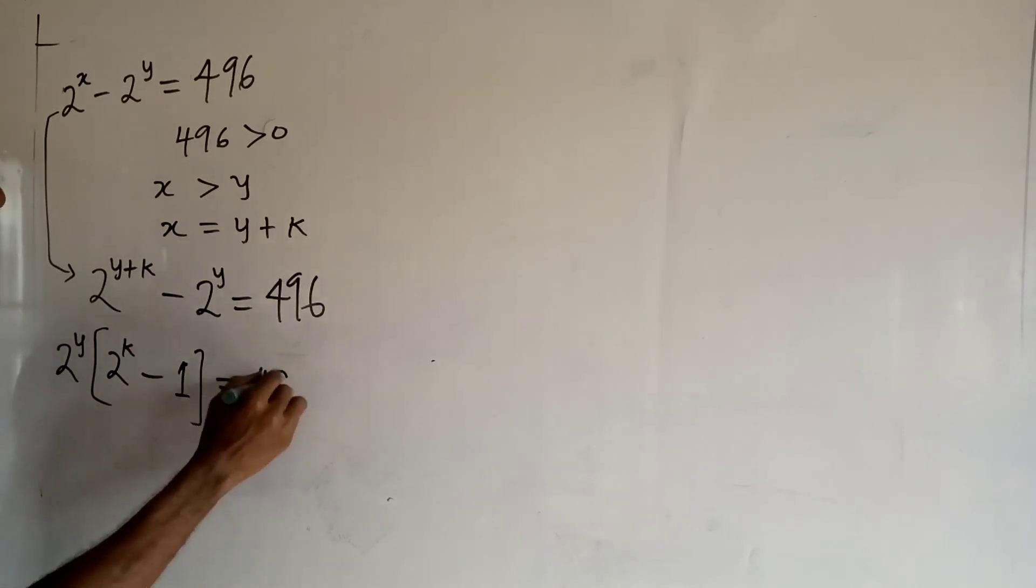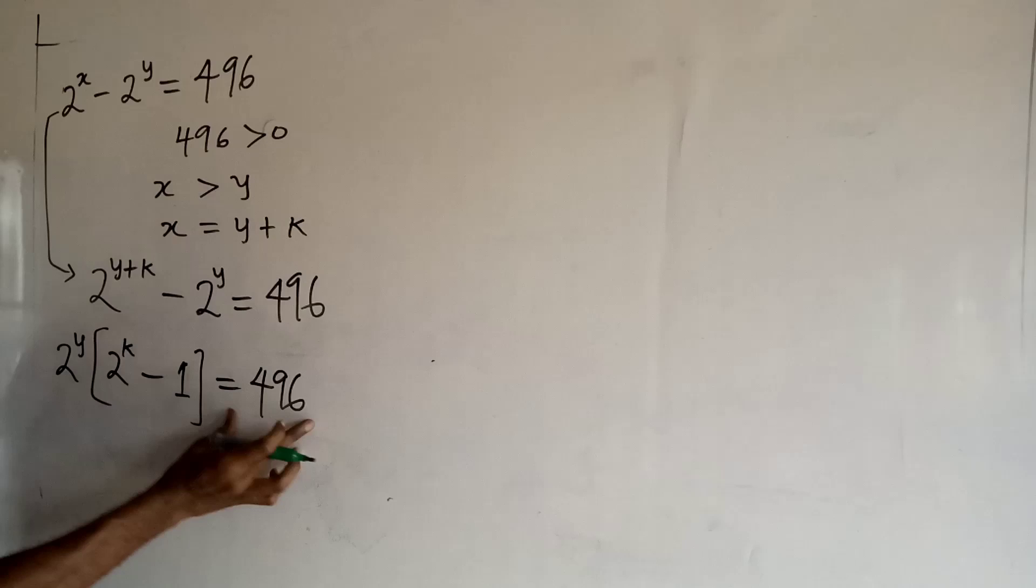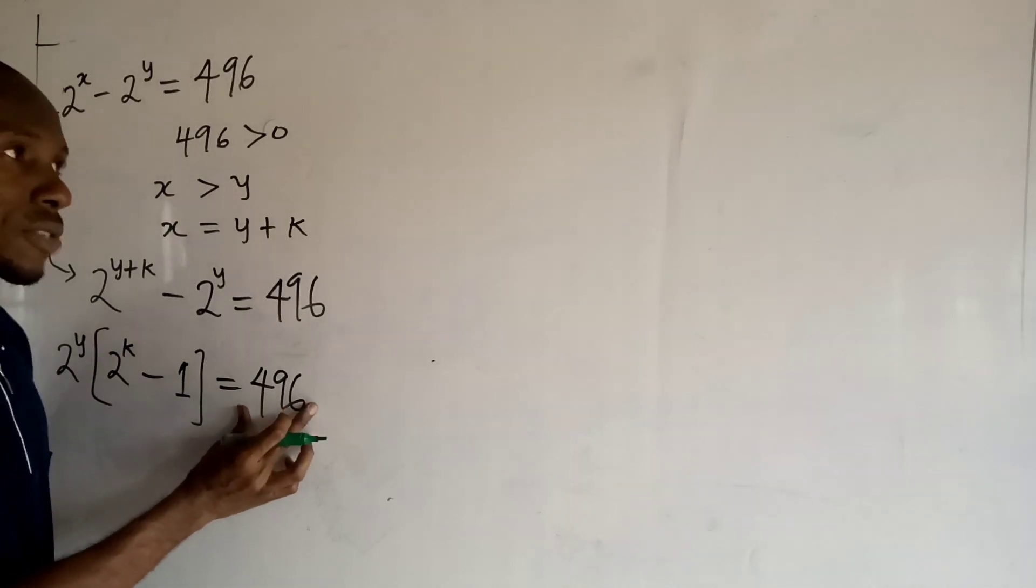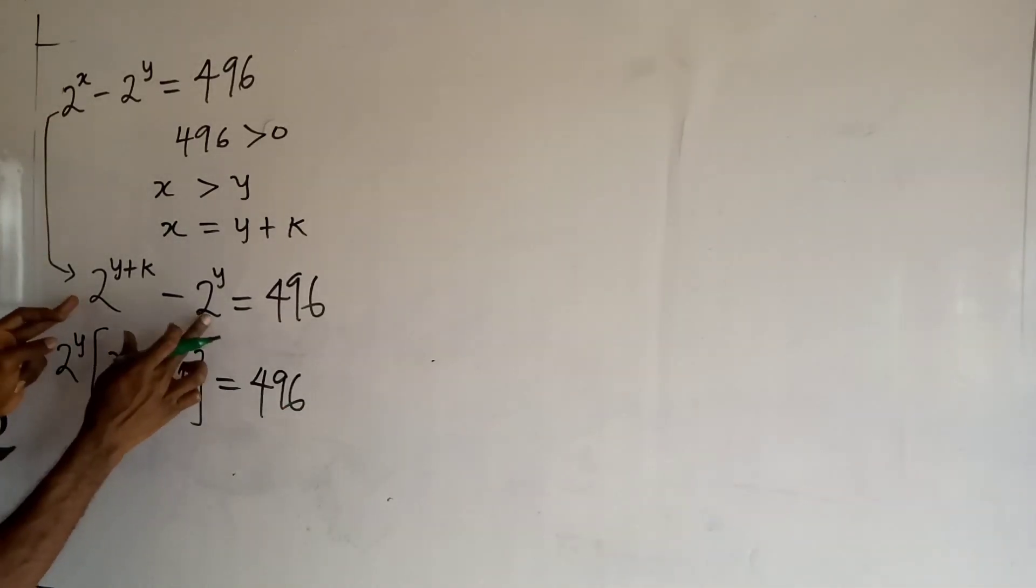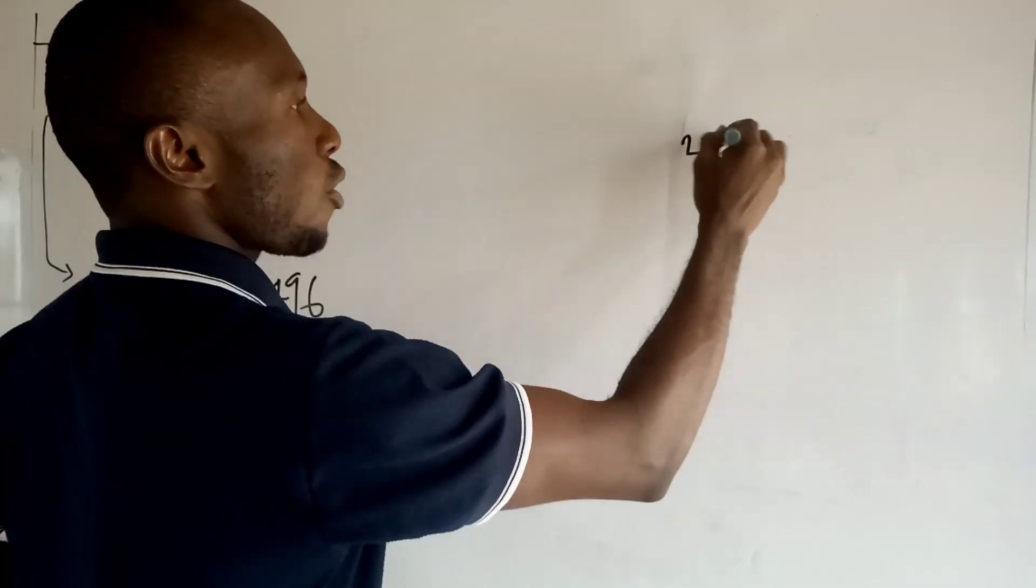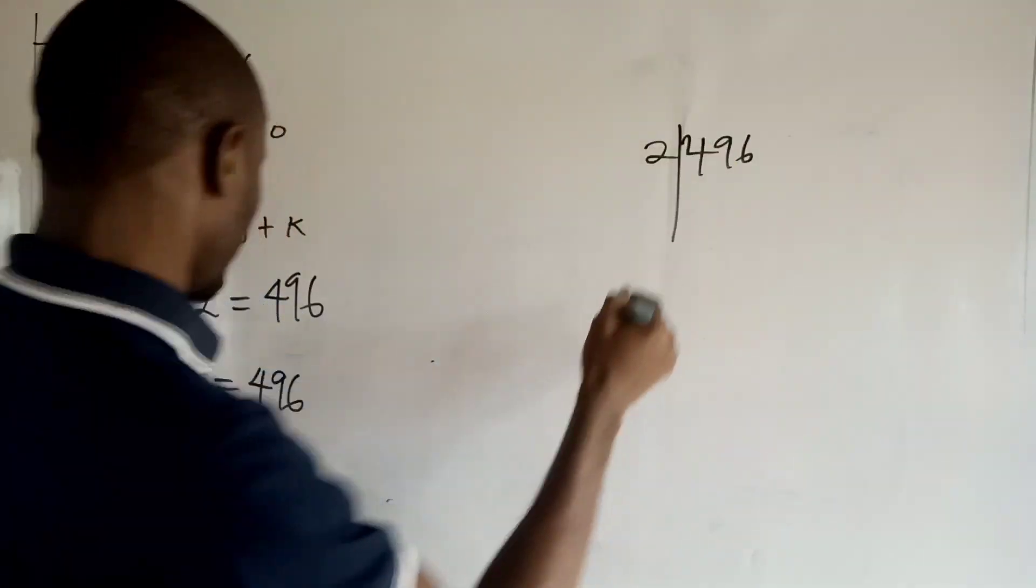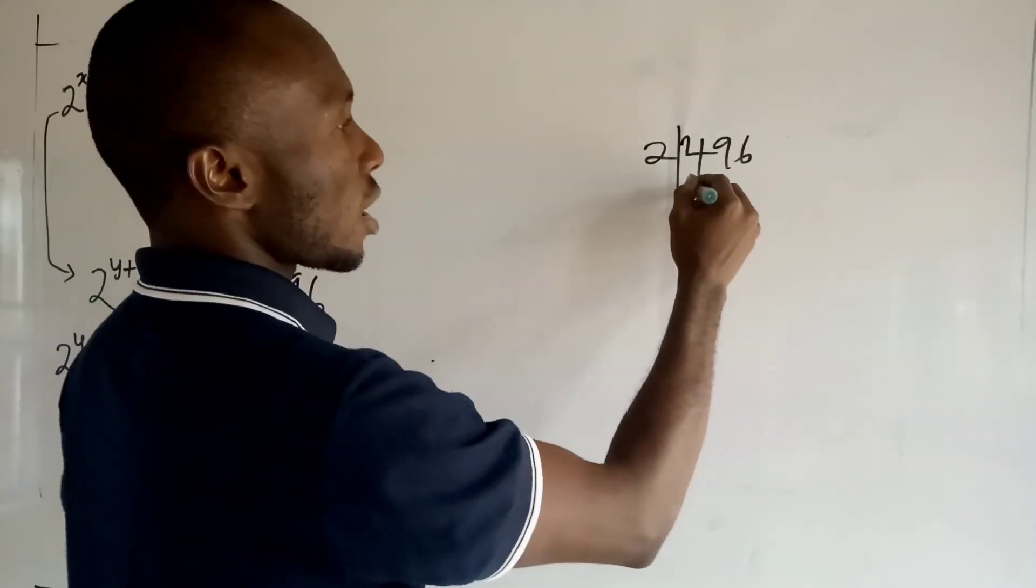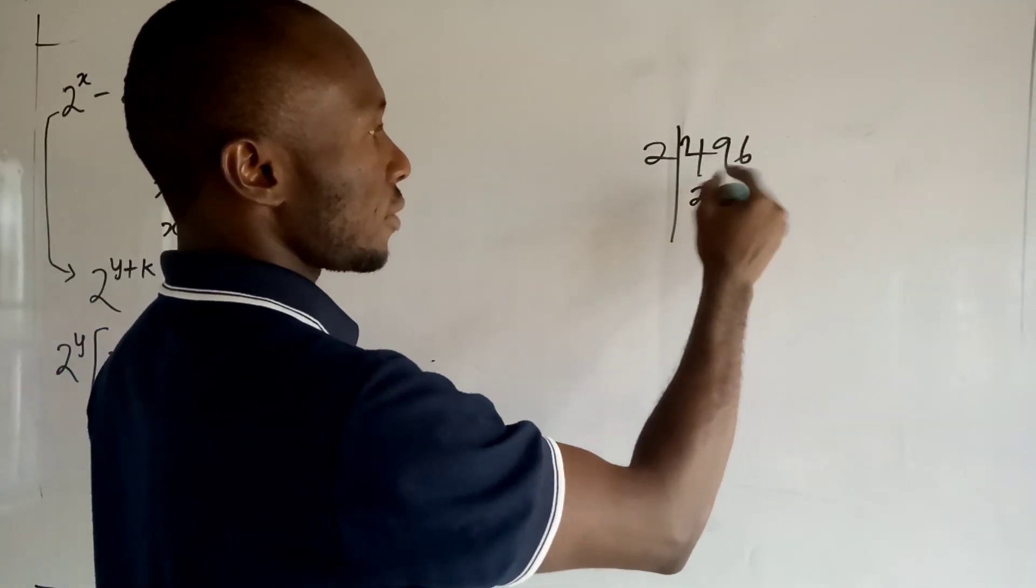Now at this point I want to reduce this guy in index form because I'm dealing with the base of two here. So I'm going to divide 496 by two completely.